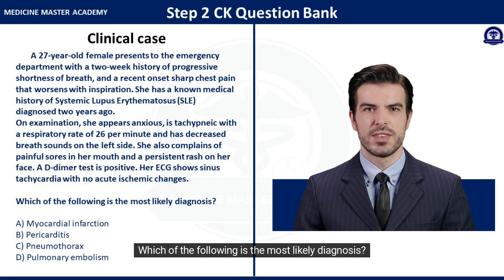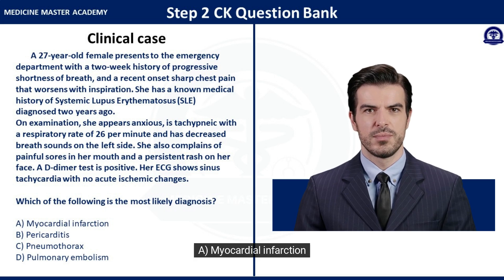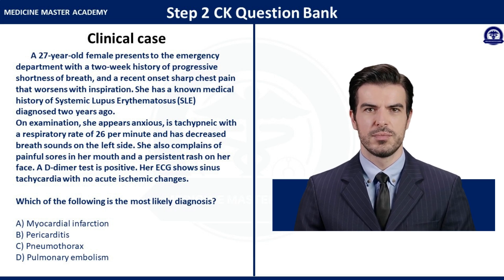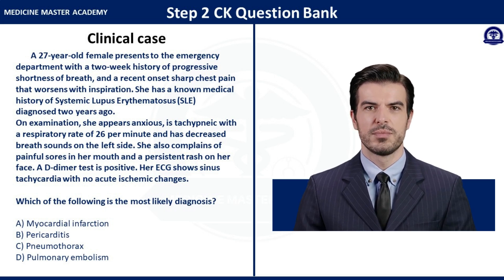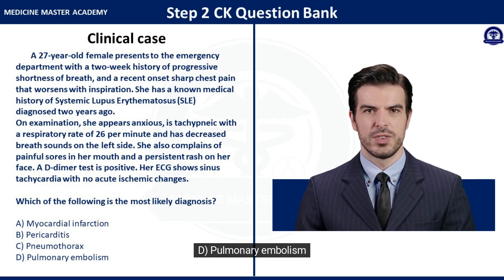Which of the following is the most likely diagnosis? A. Myocardial infarction. B. Pericarditis. C. Pneumothorax. D. Pulmonary embolism.